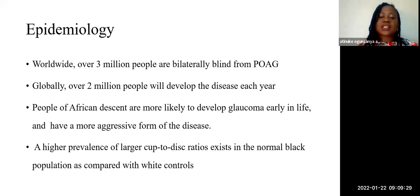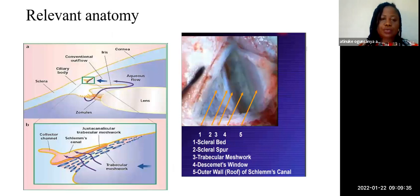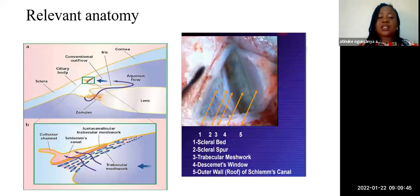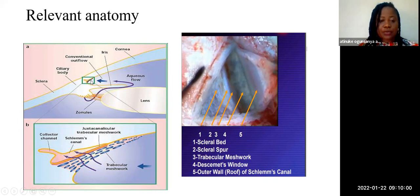A higher prevalence of larger cup-to-disc ratio exists in the normal black population compared with white controls. Regarding relevant anatomy, the drainage of aqueous is very essential. Aqueous is produced from the non-pigmented ciliary epithelium, while drainage is via the anterior chamber angles. In primary open-angle glaucoma, the obstruction to flow is at the level of the angles. Aqueous is produced and migrates between the ciliary iris and the lens, from the posterior chamber to the anterior chamber, and then into the angles.